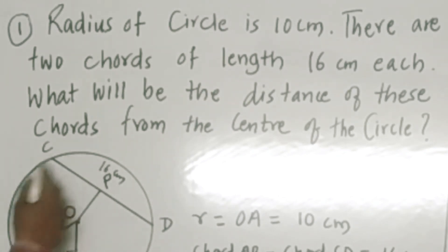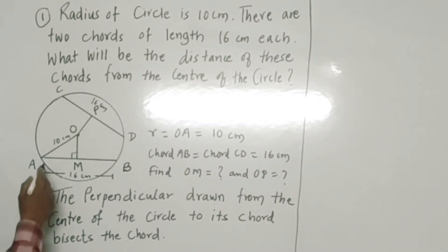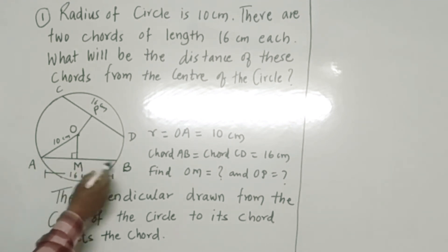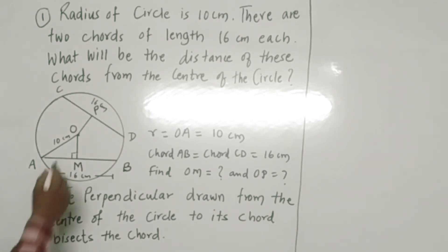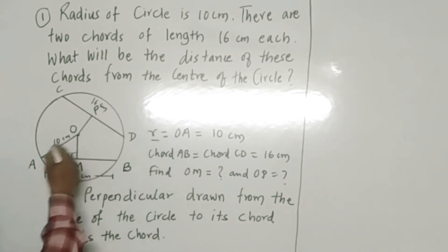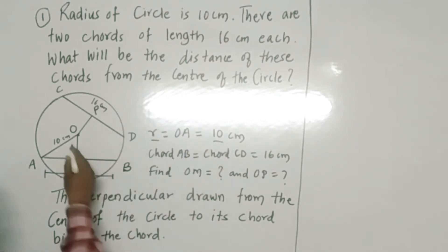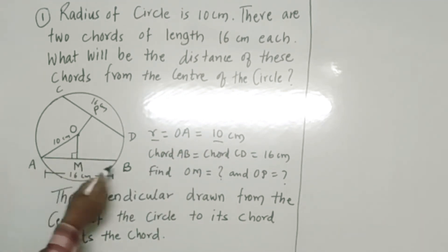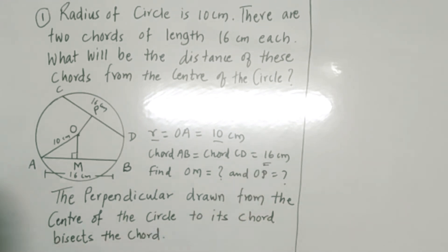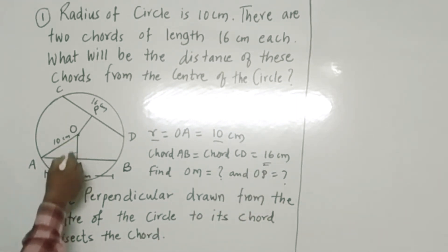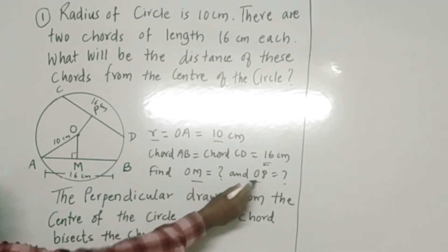Let us consider a circle with center O. Chords AB and CD are the two congruent chords of the circle with center O. Here, let radius OA equal 10 centimeters, and chord AB and chord CD equal 16 centimeters. We have to find the distance of the chord from the center of the circle, that is, we have to find OM and OP.